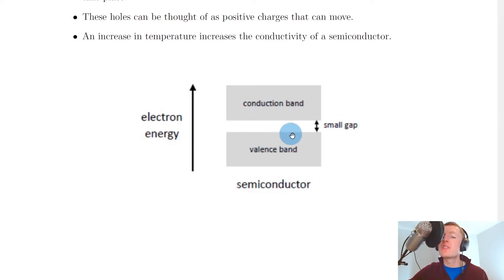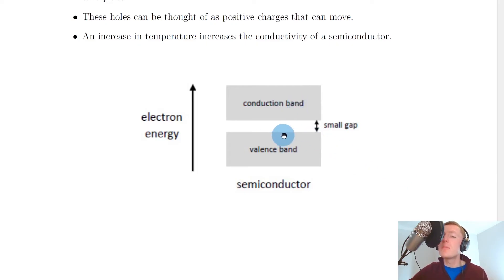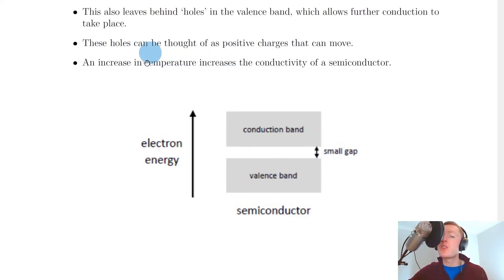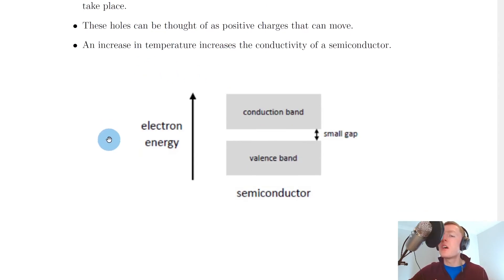Electrons in the valence band, when excited, will have enough energy to move across the band gap into the conduction band at a higher energy level. When electrons are in the conduction band they can move about and conduct, meaning the semiconductor can be made to conduct by giving valence band electrons sufficient energy. This could be done by increasing the temperature, by exposing the semiconductor to light, or by doping. To help visualize conduction and holes, here's a quick simulation.